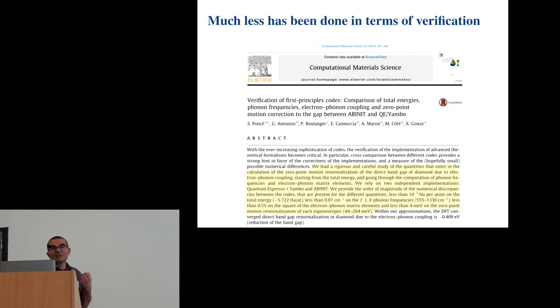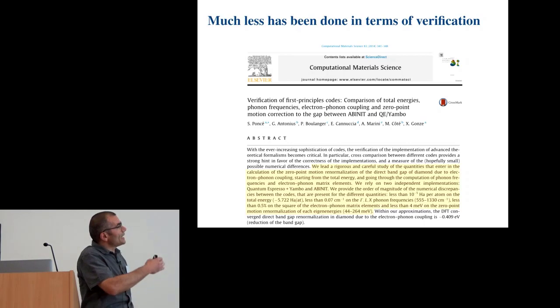So, now in terms of verification of the code, as far as I know, very little was done, and the only paper that I'm aware of is this comparison between Abinit and quantum espresso that was carried on by Samuel Ponce, Michel Coté, Xavier Gons, and others, and where they basically looked at different quantities systematically going from phonon frequencies and going up to electron phonon matrix element and characterizing the kind of differences that there were between the two codes.